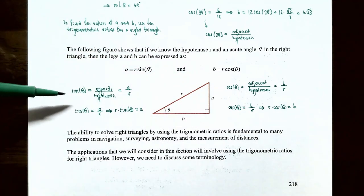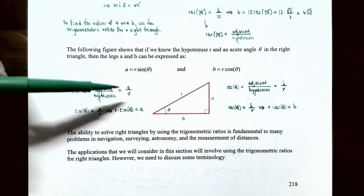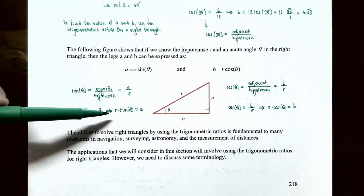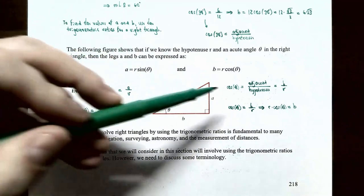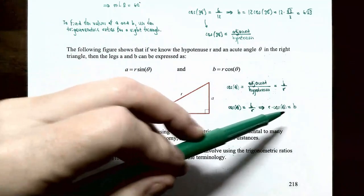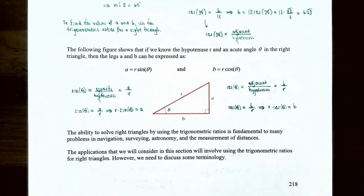So sin θ = opposite/hypotenuse gives A/R, and multiplying by R gives A = R·sin θ. Cosine θ = adjacent/hypotenuse gives B/R, and multiplying by R gives B = R·cos θ. The ability to solve right triangles using trigonometric ratios is fundamental to many problems in navigation, surveying, astronomy, and measurement of distances.